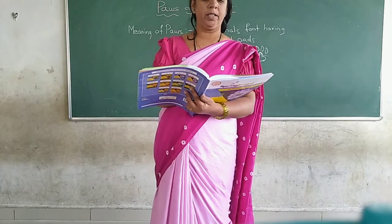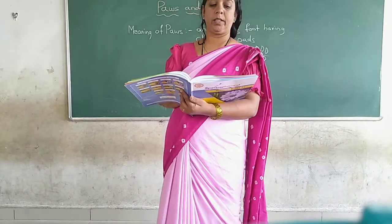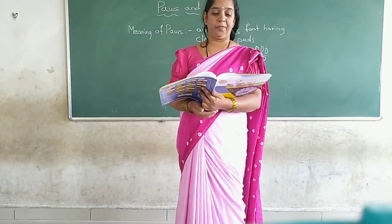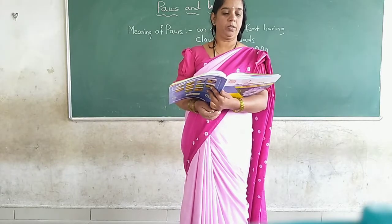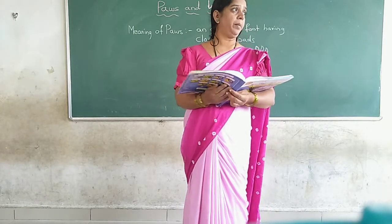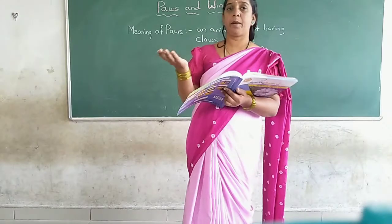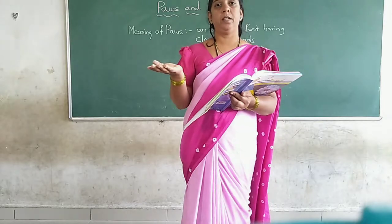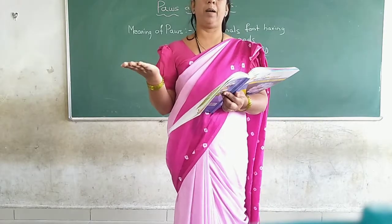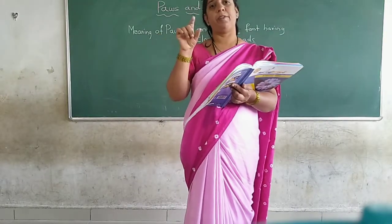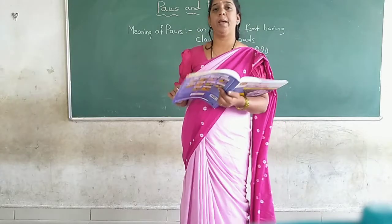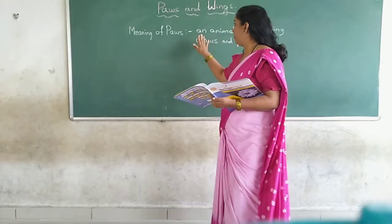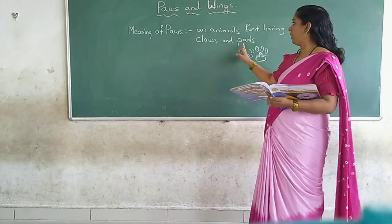We have already learnt that living things look different. In the same way, among humans, some have small hands and small palms, some have bigger hands and bigger palms, some have long fingers and some have very short fingers. In the same manner, animals also have different types of paws, claws and pads.